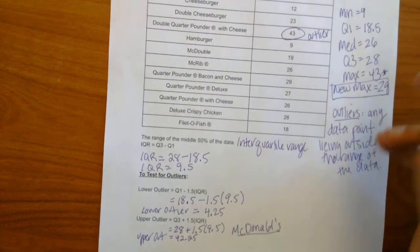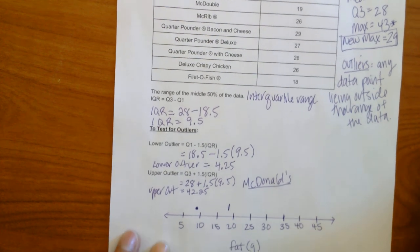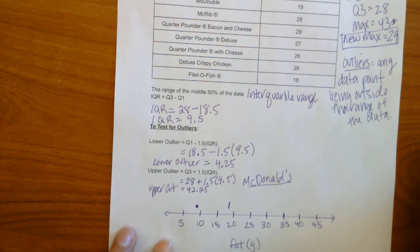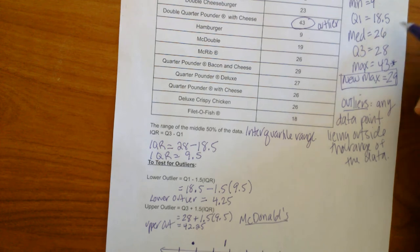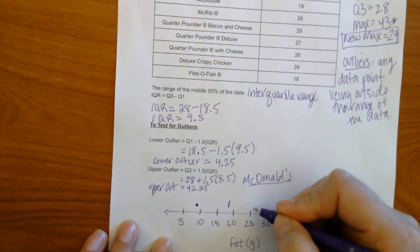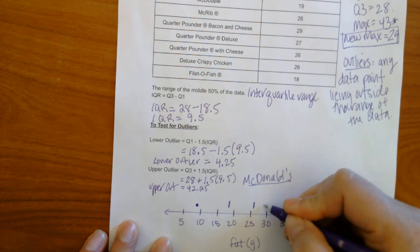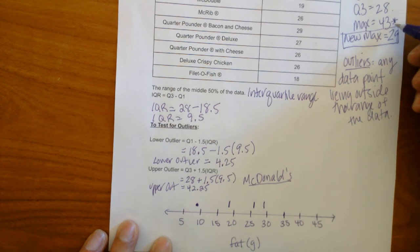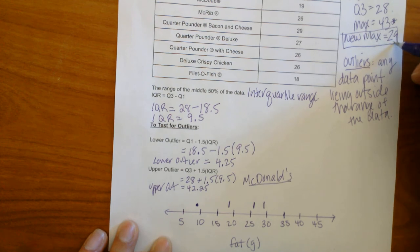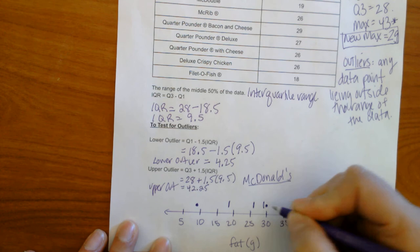Then next is our quartile 1, 18.5. So that lies about here. This is not going to be exact. Please remember that. But we are going to see the overall trend. Our median was 26. Our quartile 3 was 28. Our new max is going to be 29. So we're going to make that little point right there.